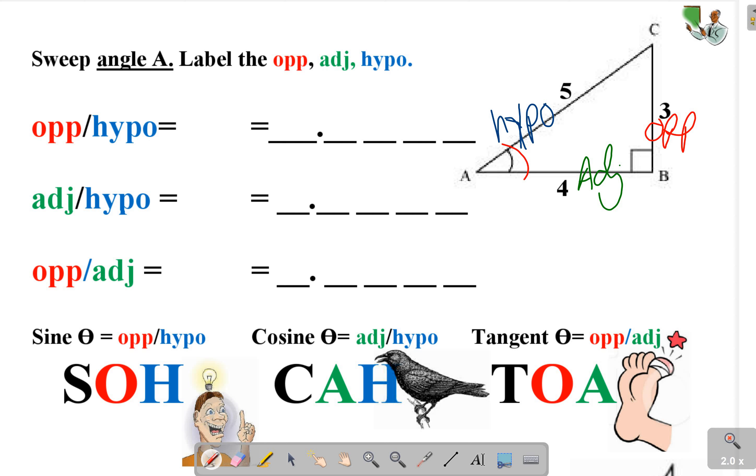And if we do opposite over hypotenuse, in this case our opposite is 3 over our hypotenuse which is 5, and three-fifths of a dollar is 60 cents. So that's our opposite over hypotenuse ratio.